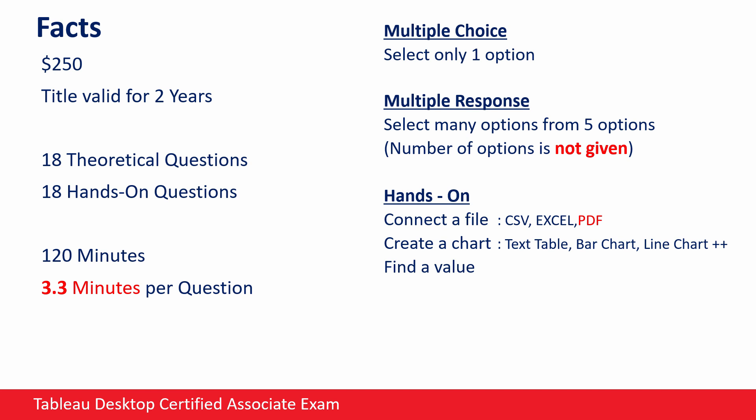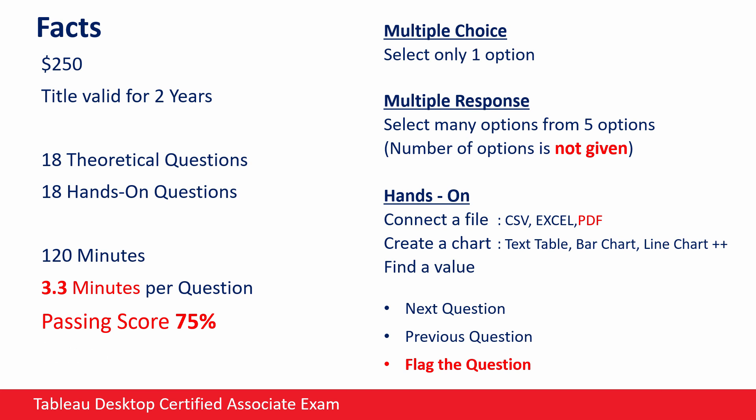In the exam, questions are not categorized by their type. So you can get a hands-on question, then a multiple choice question, then again a hands-on question. During the exam, you will see the questions one by one and navigate between them using the next and previous buttons. You can always flag a question to visit later — if you are not sure about your answer, just flag it and continue. There will be a time countdown so you will know how many minutes are left. The passing score is 75% and your rate is calculated automatically, meaning each question brings different points. You cannot conclude that you will pass if you have 27 correct answers — sometimes 25 correct answers can be enough, and sometimes 30 may not be enough, because your score depends on the difficulty level of the questions you answered correctly.